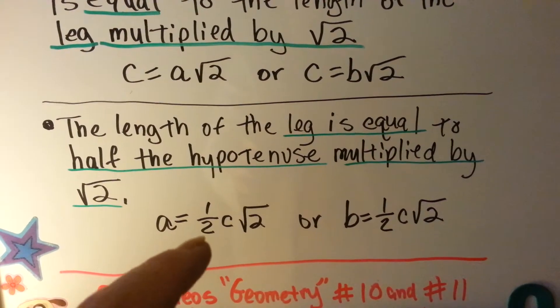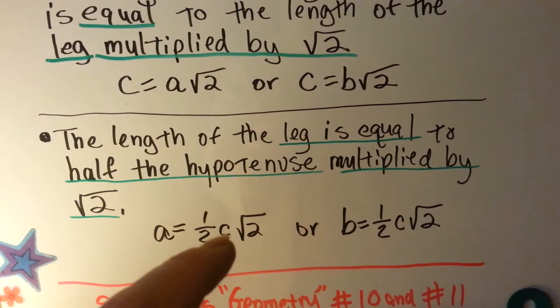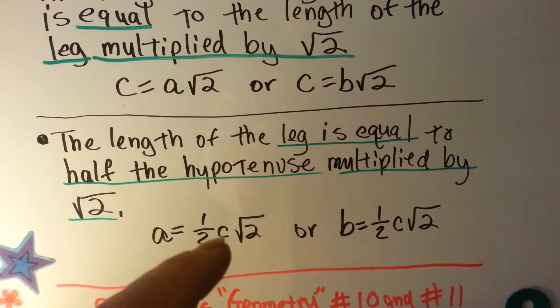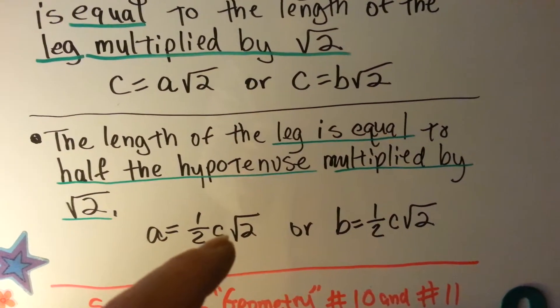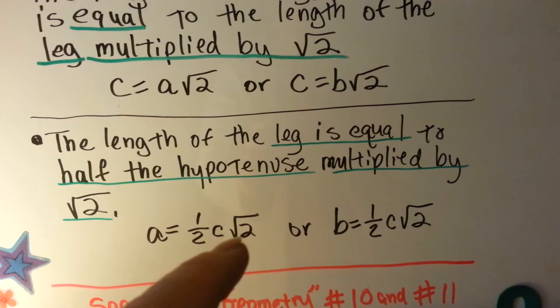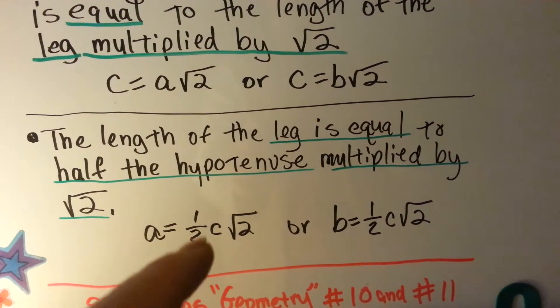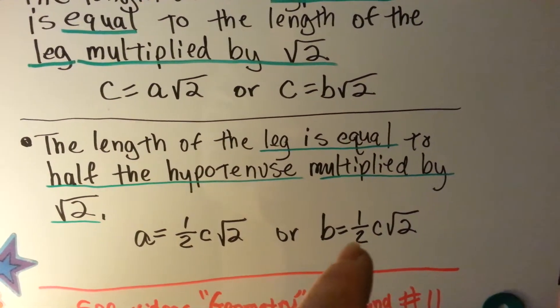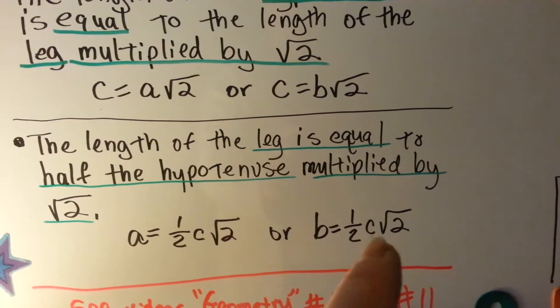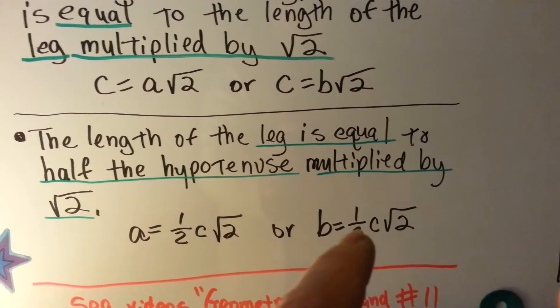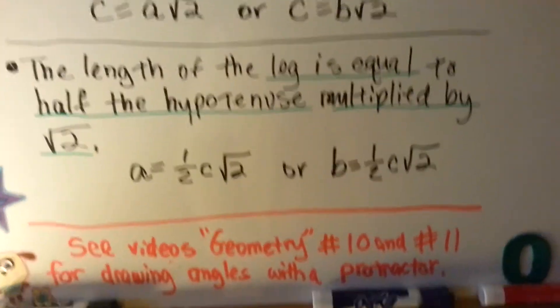So, if you have leg A and you want to find out what it is, you can say, I'm going to find out what the side C, the hypotenuse, multiplied by the square root of 2 is, and I'm going to cut that in half. If you want to find leg B, you multiply the hypotenuse by the square root of 2, and you cut that in half, and then you would have them.